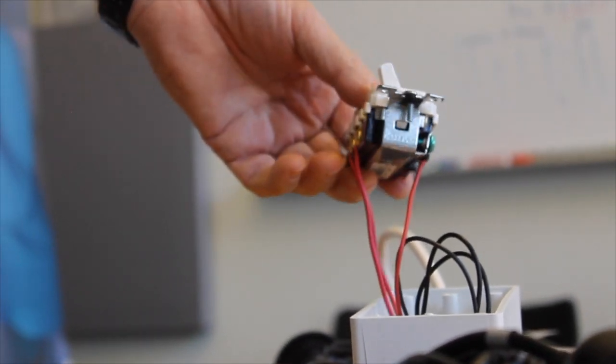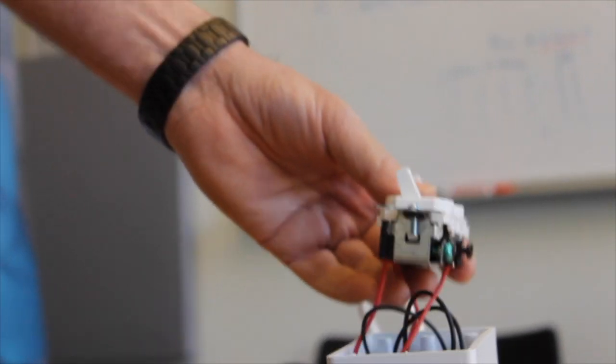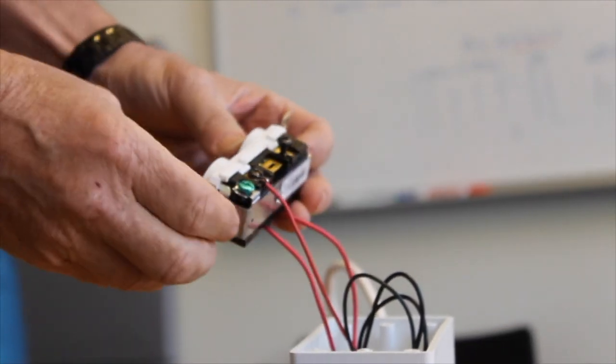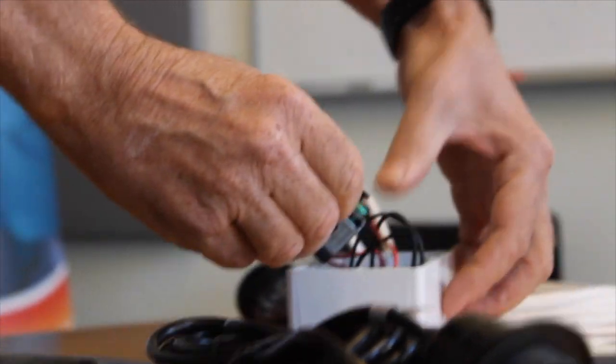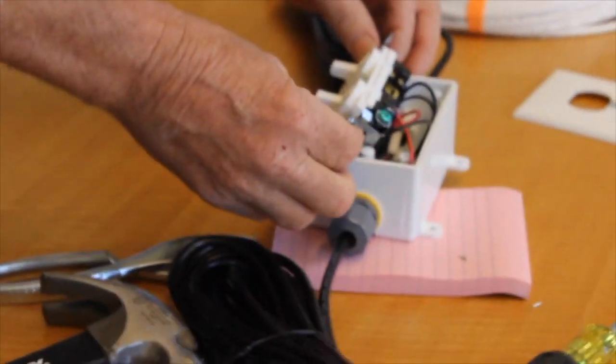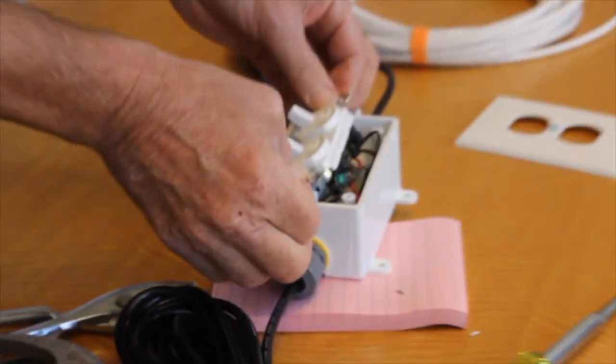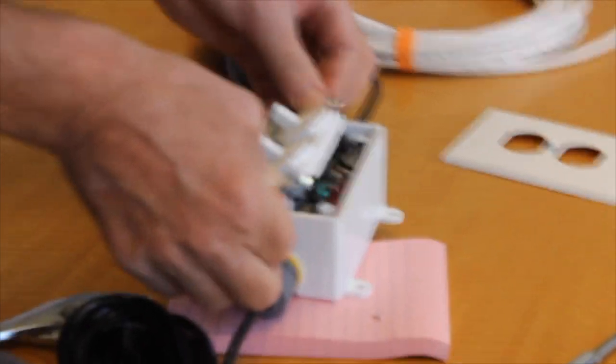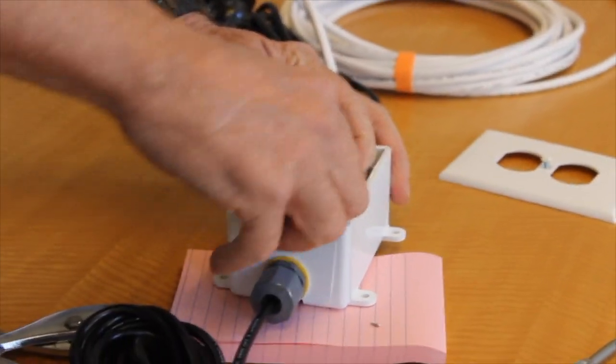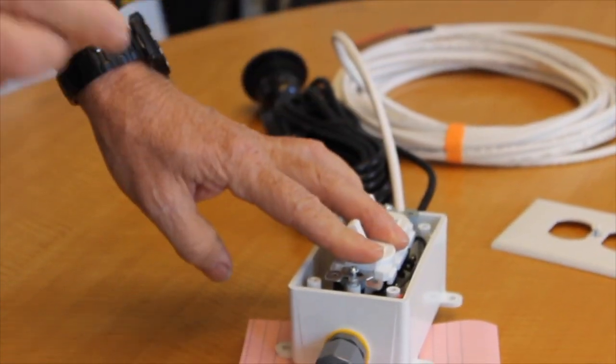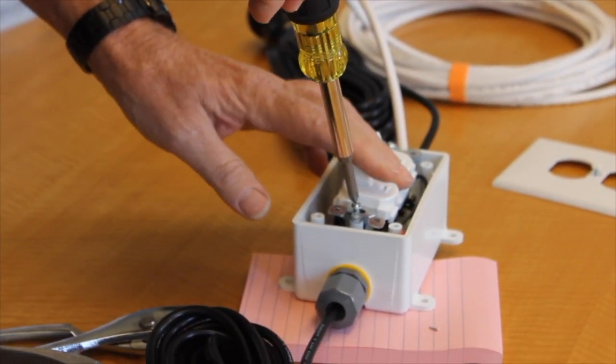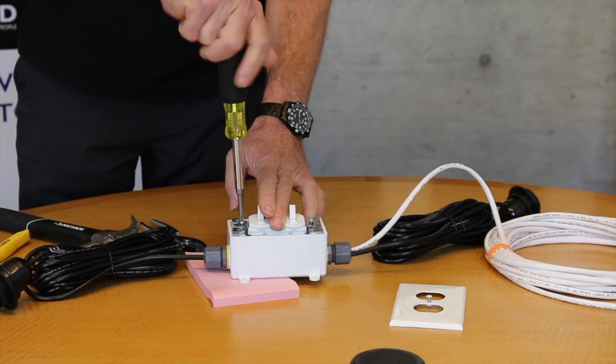Now finally all we have to do is place the switch into the box. See these little screws here? These are what are going to bite into the box and lock the switch in. So I put those onto the holes. Make sure I'm not pinching any wires in the process.